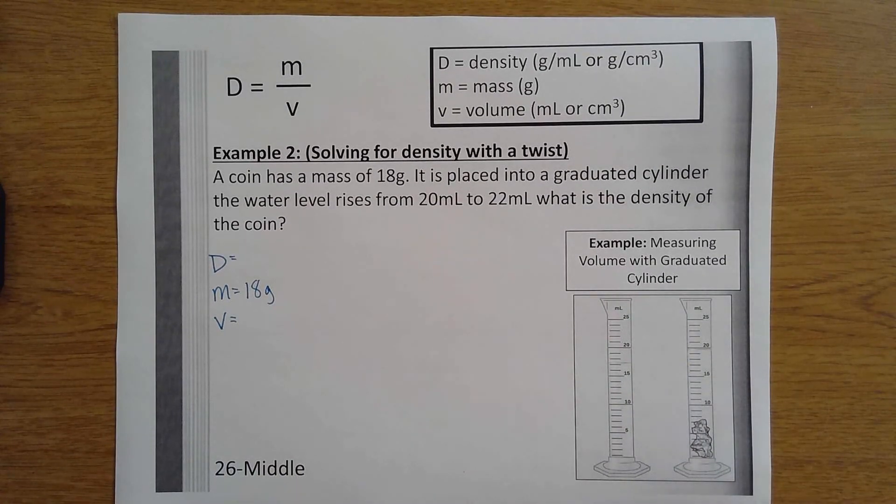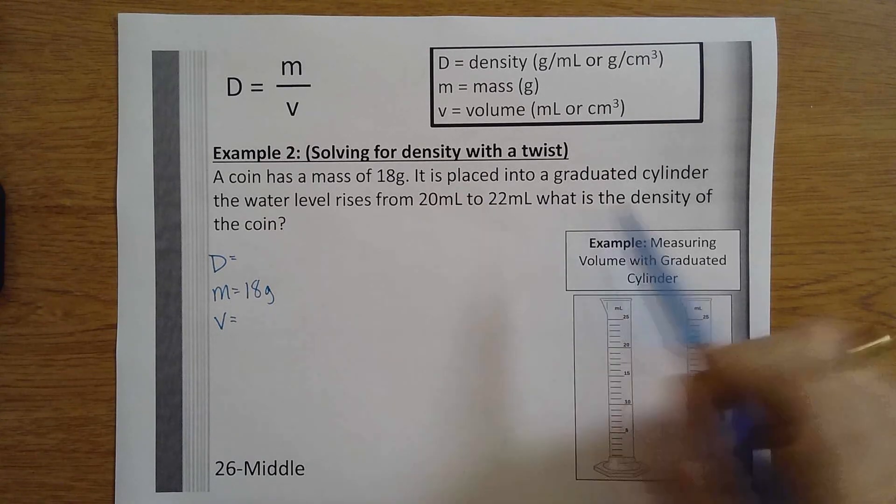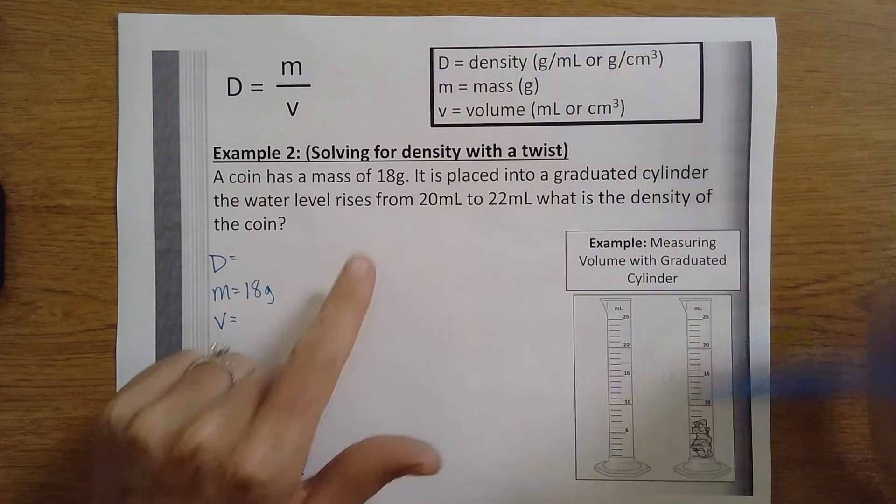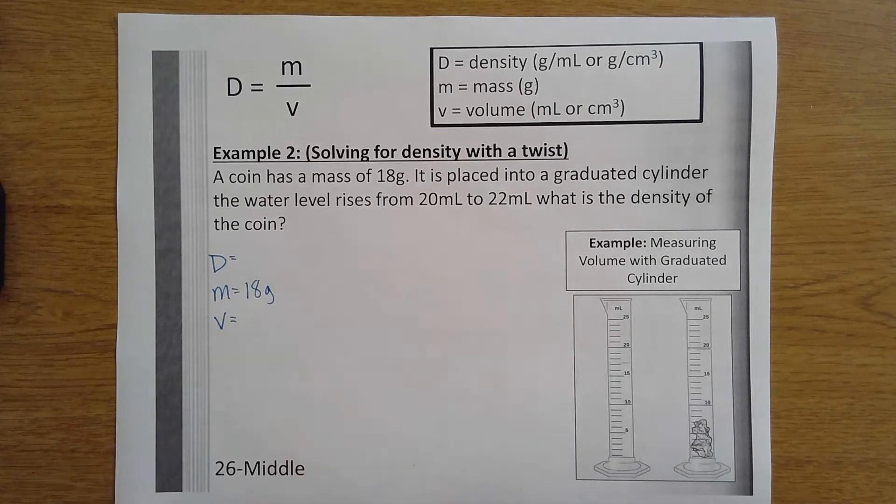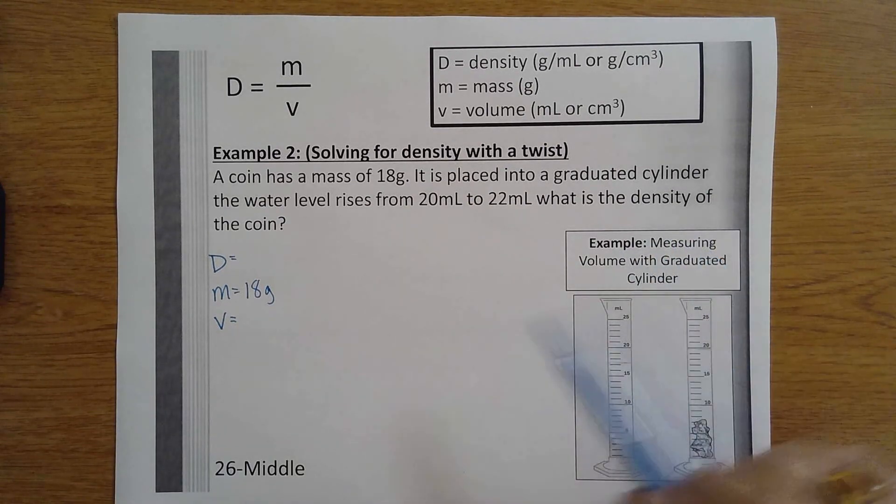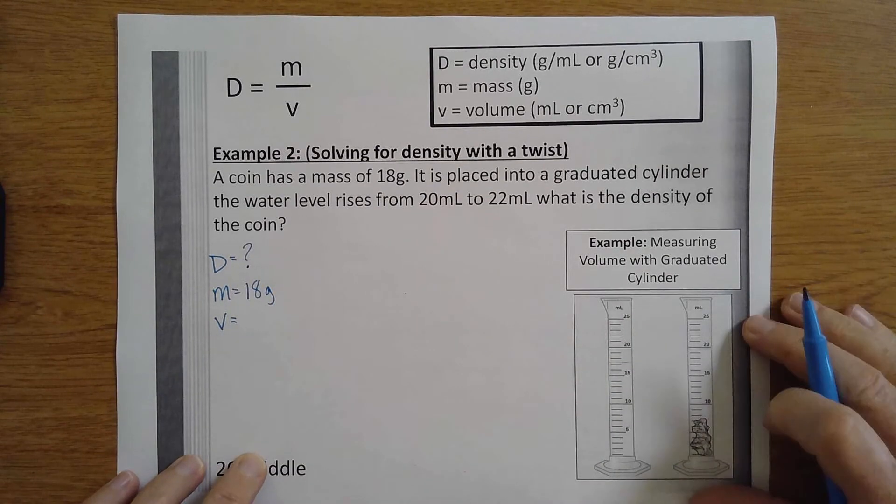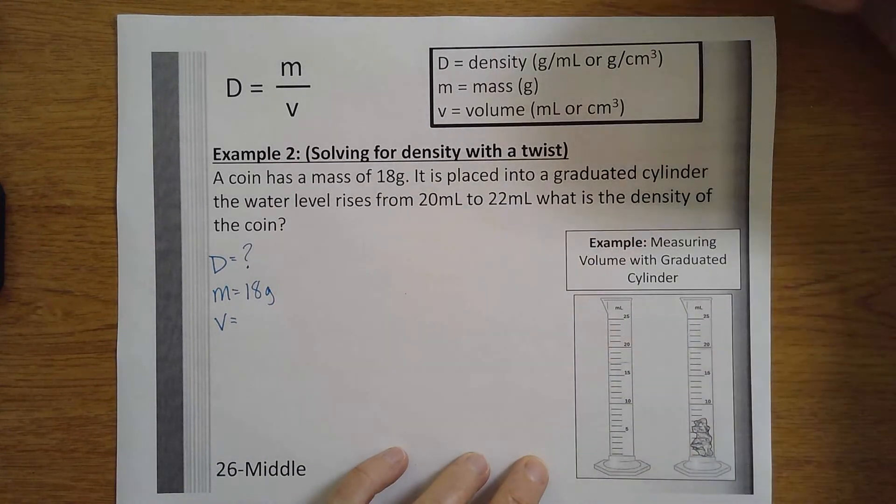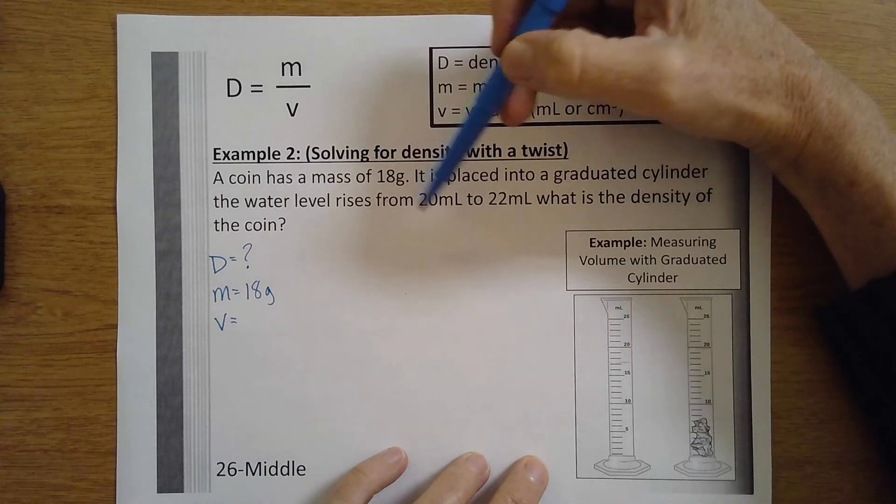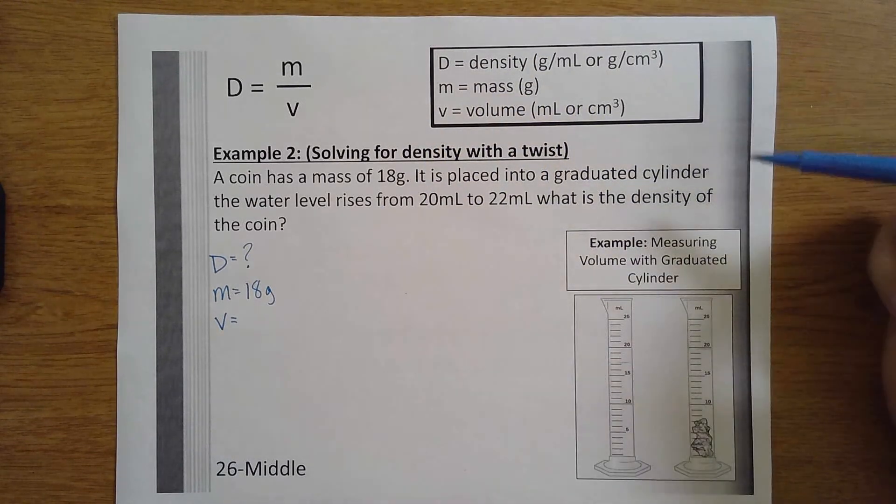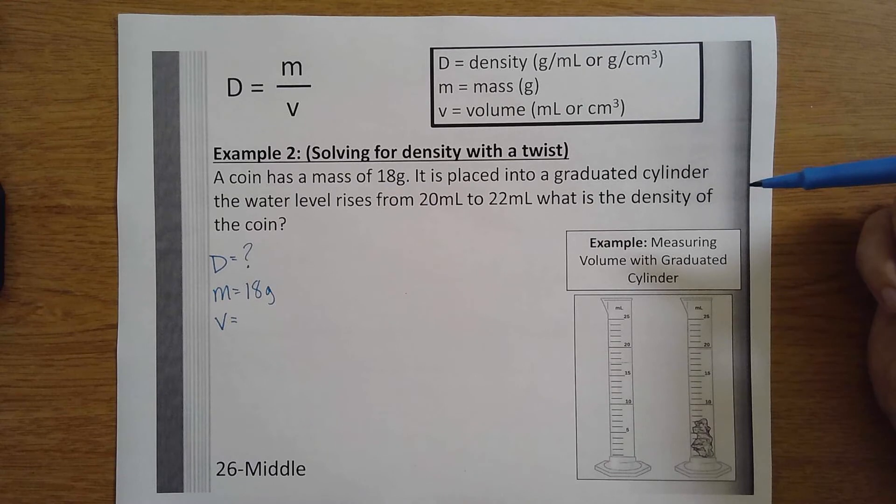It is placed into a graduated cylinder and the water level rises from 20 to 22 milliliters. What is the density of the coin? So I'm looking for density because it says what is the density, but here it says two volumes, and the coin is placed into a graduated cylinder and the water level rises from 20 to 22 milliliters.